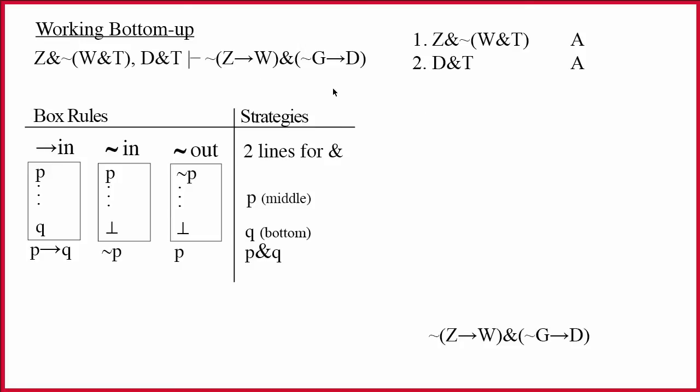The argument in this video requires a proof that makes use of all four of the bottom-up things that we've been focusing on recently. We have introduced three box rules: arrow in, tilde in, tilde out, and we've introduced a strategy that I call two lines for ampersand. A strategy isn't a rule, so it never gets mentioned in doing the proof. A strategy is just a process that we go through on a regular basis. What I've really wanted to emphasize is that for all four of these things, they are dictating instructions to us based on a main connective at the bottom of the proof.